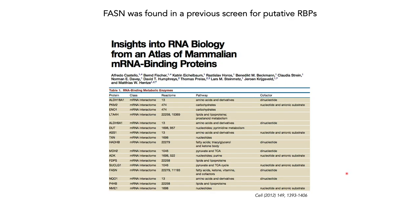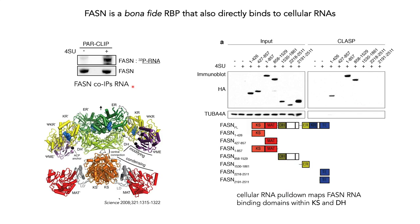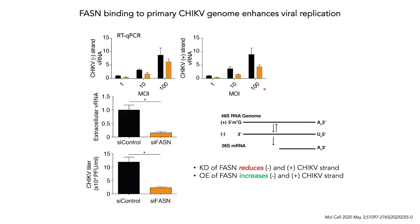One of the more interesting finds of the ChikV interactome was the discovery of quite a few non-canonical RNA binding proteins. One of those was fatty acid synthase, or FASN. FASN was found in a previous screen by Alfredo Castello and others in Matthias Hentze's group. To corroborate their work and follow up on FASN as one of our VirCLASP hits, we first checked whether fatty acid synthase could bind to cellular RNA using PAR-CLIP, which it did. We mapped the RNA-binding regions to the ketoacyl synthase (KS) domain and the dehydratase (DH) domain. We found that knockdown of fatty acid synthase reduced minus and plus strand levels, extracellular viral RNA, and the resulting ChikV titer, while overexpression led to the opposite outcome.